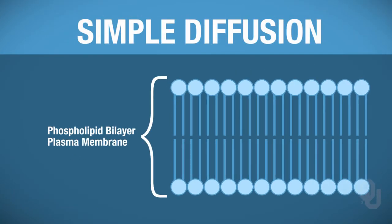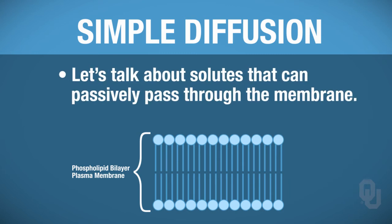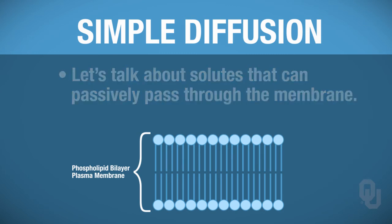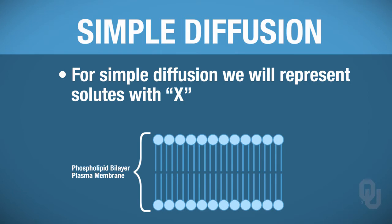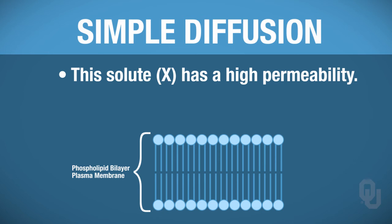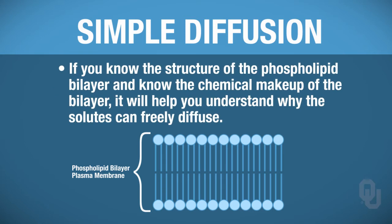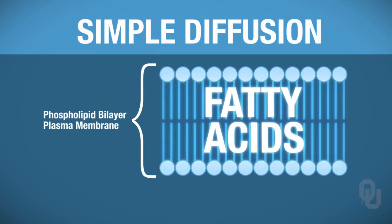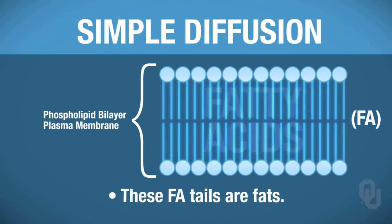Here we have a phospholipid bilayer making up the plasma membrane. We want to talk about solutes that can passively diffuse through a membrane. If it's simple diffusion, whatever solute we have — call it X — can freely diffuse through the membrane. That's another way of saying it has high permeability. If you remember the structure and chemical makeup of the phospholipid bilayer, the tails are fatty acids — they're fats.